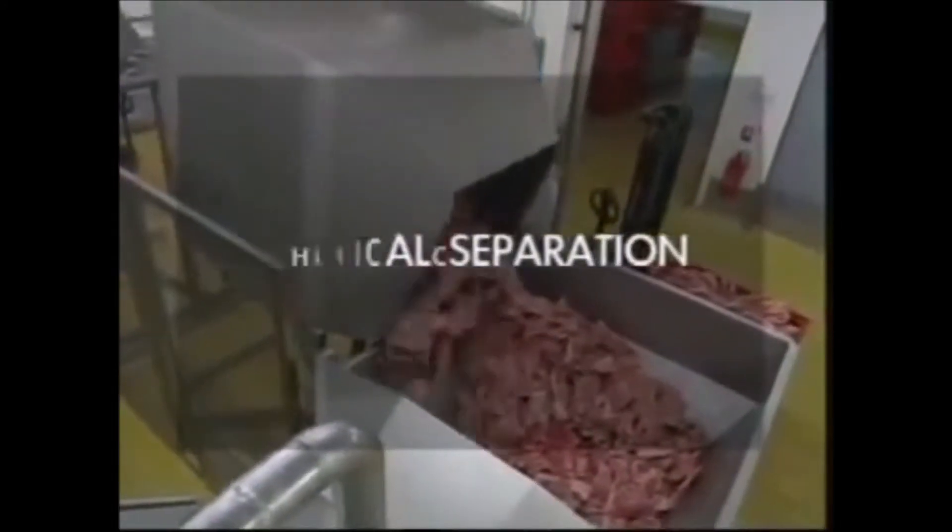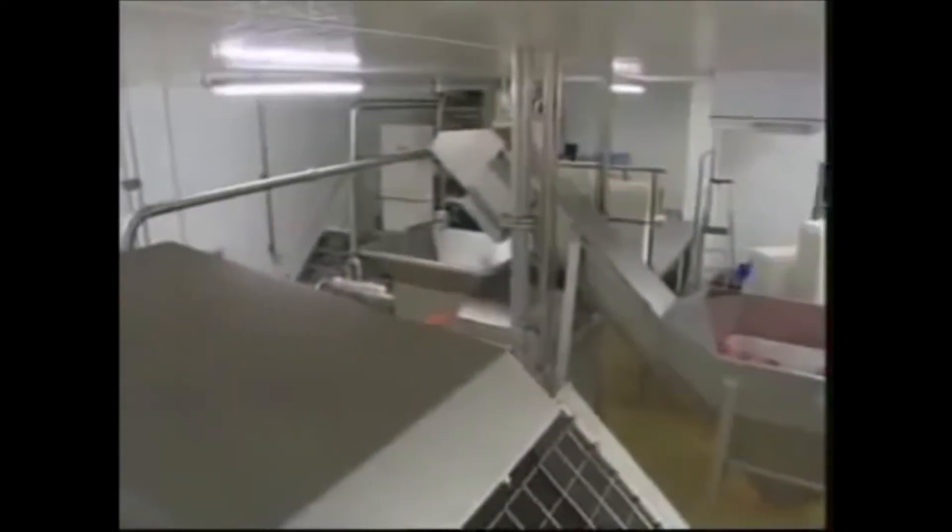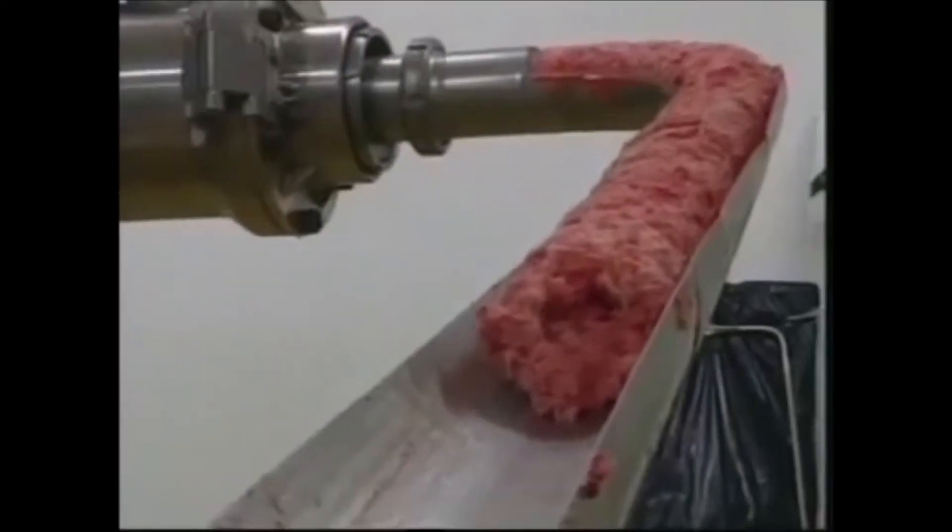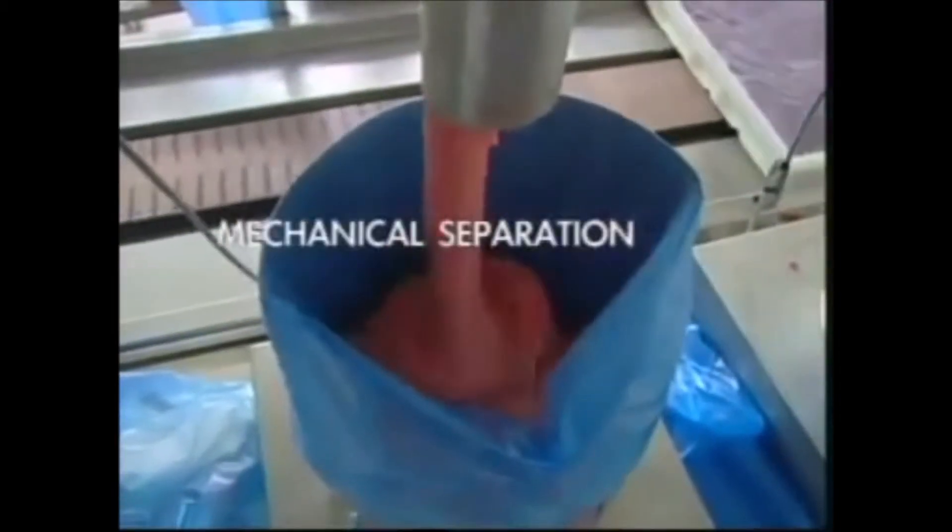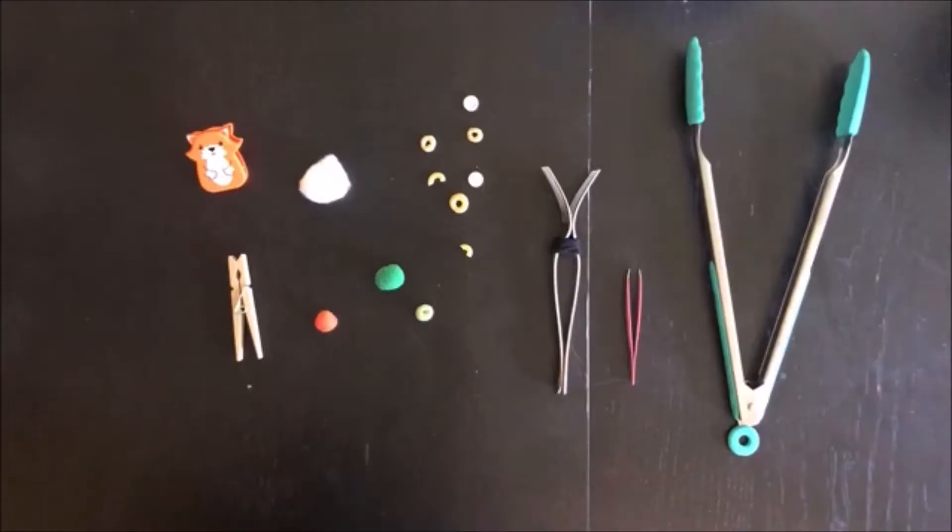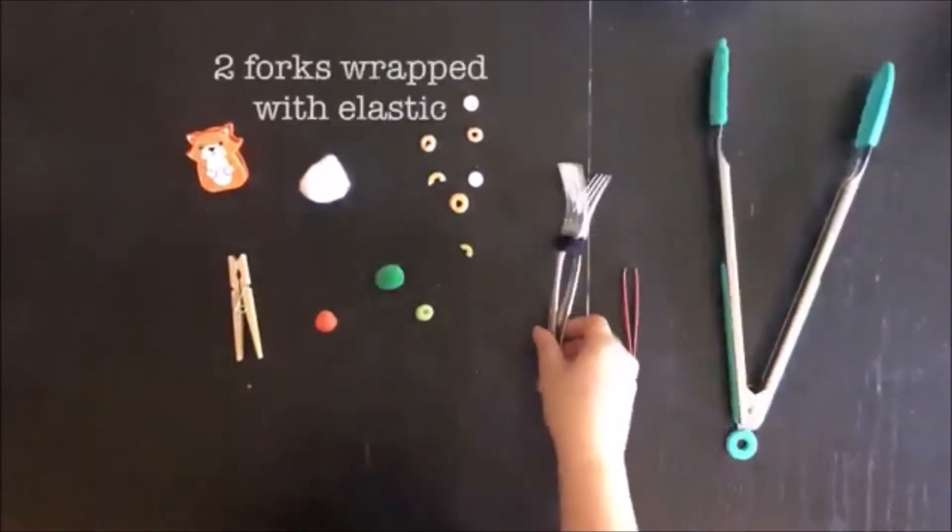So the first one is mechanical separation. When we say mechanical separation, from the word mechanical, hands-on, we use tools, we use our hands to separate them mechanically or physically. So we have tools that we use, it could be our hands, we could use tongs, forceps, pliers.